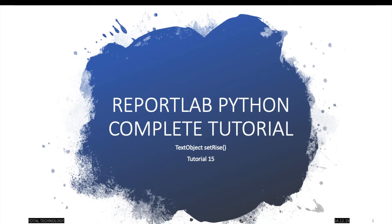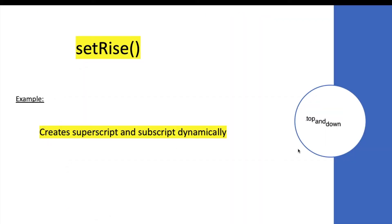For those not familiar with superscript and subscript: the actual text is in the middle, the top part becomes the superscript and the bottom part becomes the subscript. How we can create that dynamically is the main context of this tutorial, and for that we use setRise, which is part of the text object module.